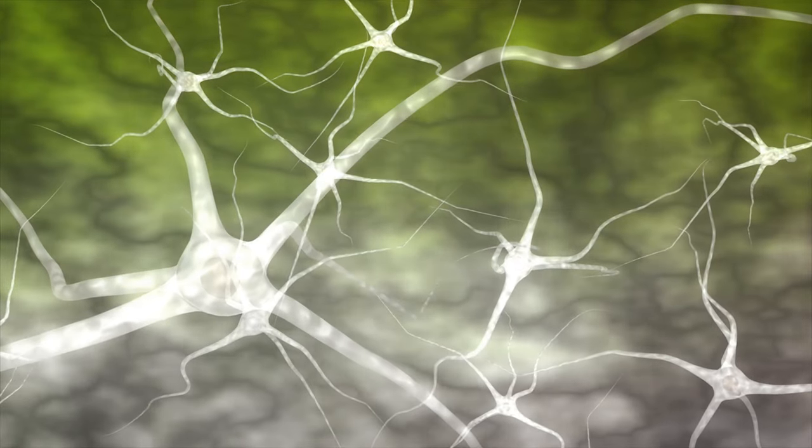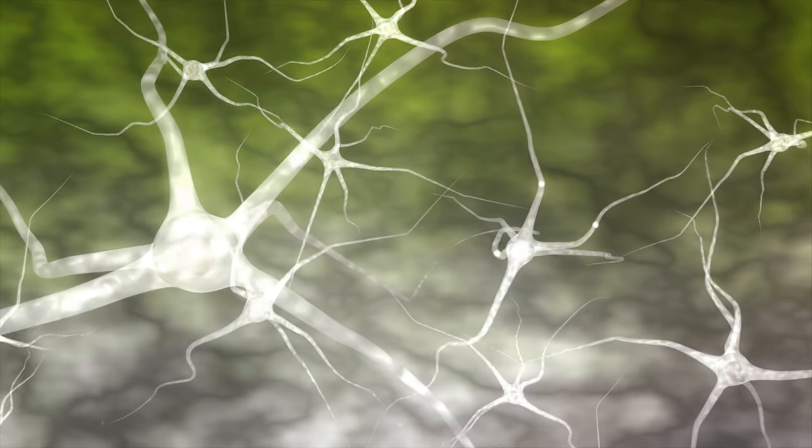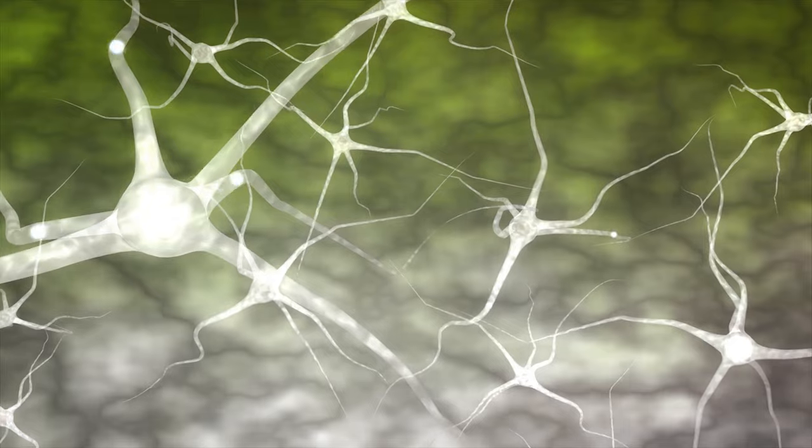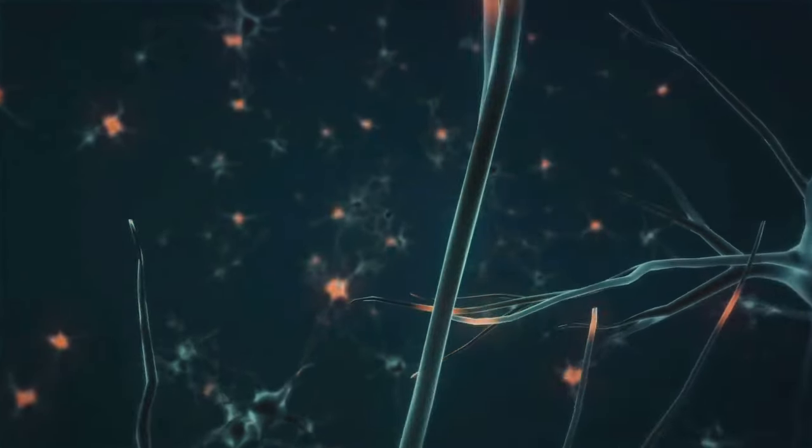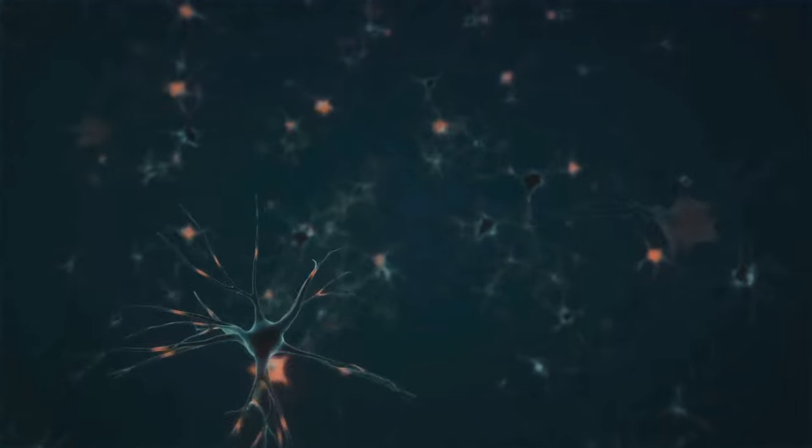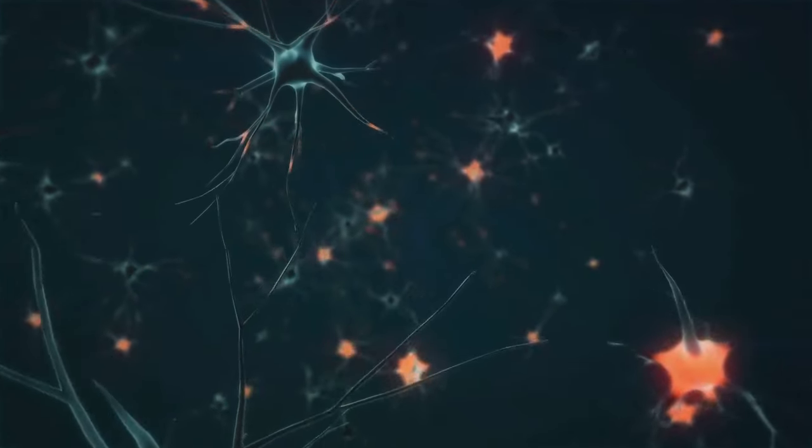For example, neurons in our brain are incredibly energy hungry. They require a constant supply of energy to function properly. So, when mitochondrial DNA in these cells mutates, the energy supply can get disrupted, leading to neurological conditions.